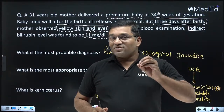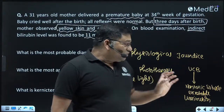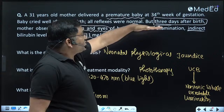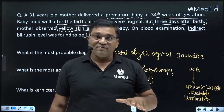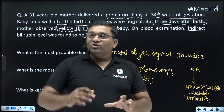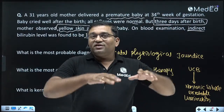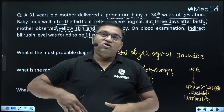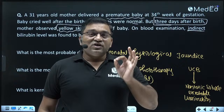Jaundice is a clinical condition — it is not a disease, it is a sign. Neonatal physiological jaundice means when jaundice appears on the second, third, or fourth day of life. The unconjugated bilirubin increases gradually up to a certain level — around 12, 13, 14 mg per deciliter — and that is known as neonatal physiological jaundice.